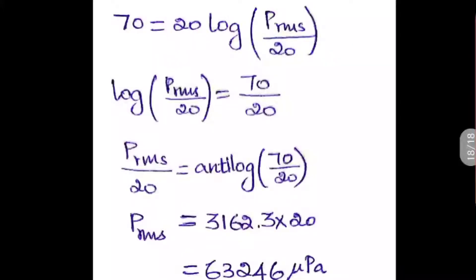We take 70 equals 20 log of P_RMS by 20. To find P_RMS we take the anti-log, so log of P_RMS by 20 equals 70 by 20. Taking anti-log, P_RMS by 20 equals anti-log of 3.5, giving P_RMS equal to 63246 µPascal. Note that this cannot be done without a calculator, so such questions typically won't appear directly in TNEB exams.